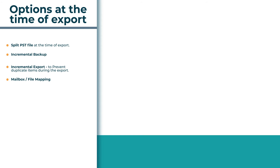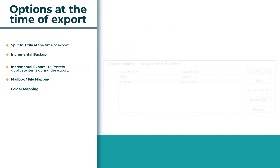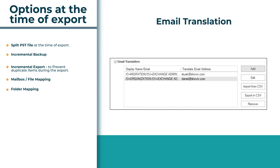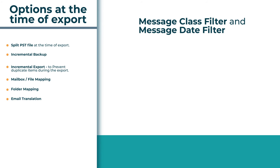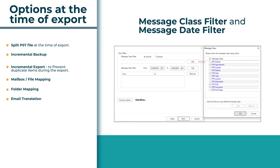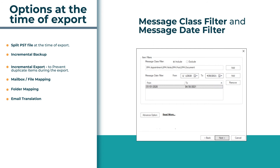The software also provides an advanced option like folder mapping, where you can export the source folder data into another particular target folder. It also provides an option of email translation to change the improper display email address. The software also provides an item filter option where you can select message class filters and message date filters.